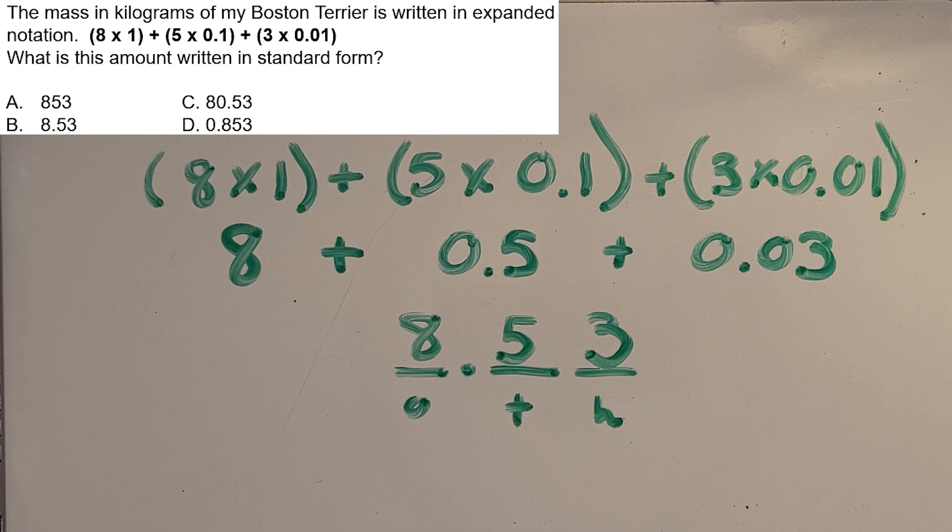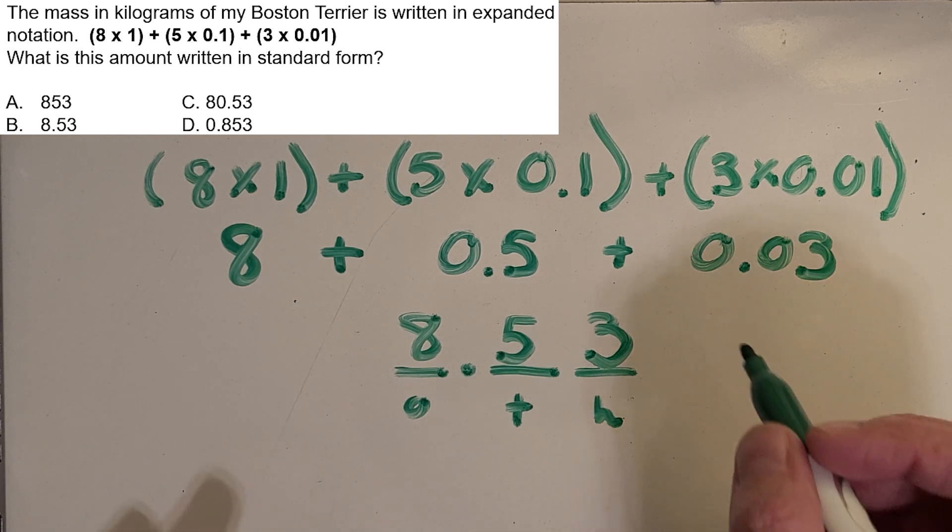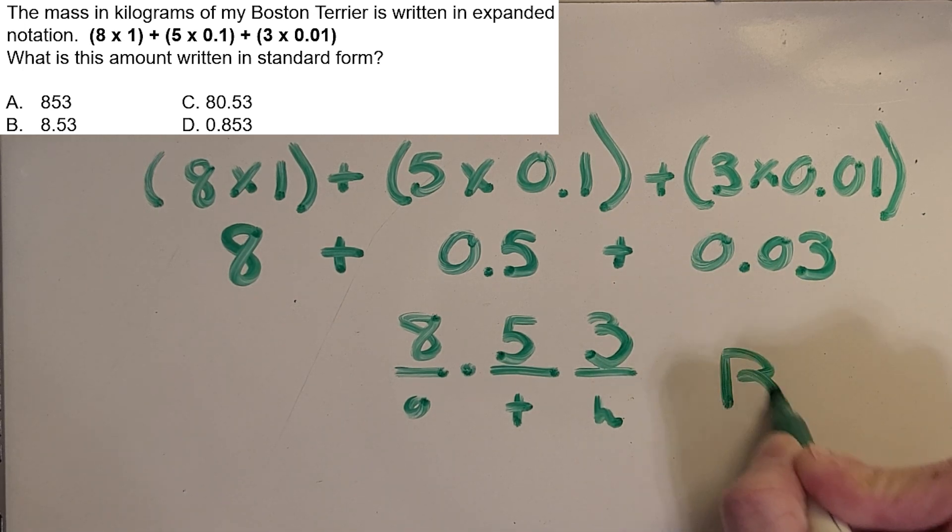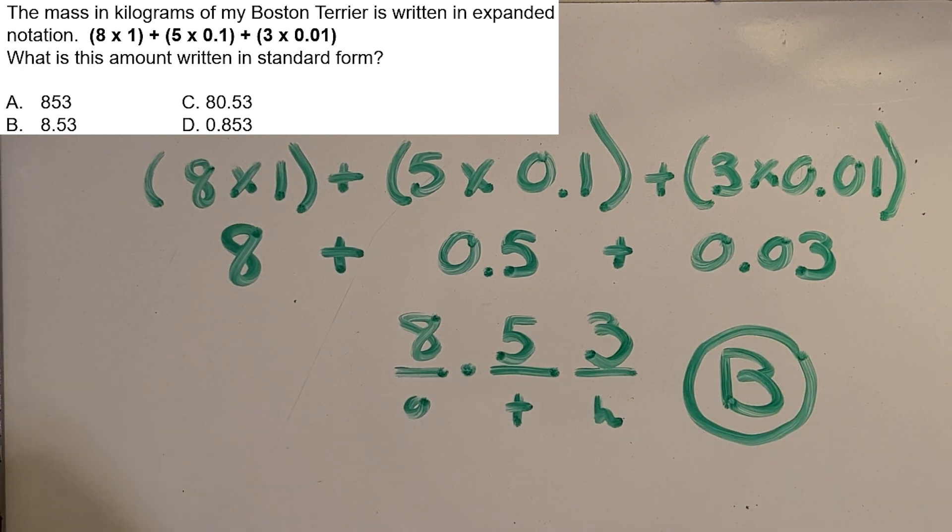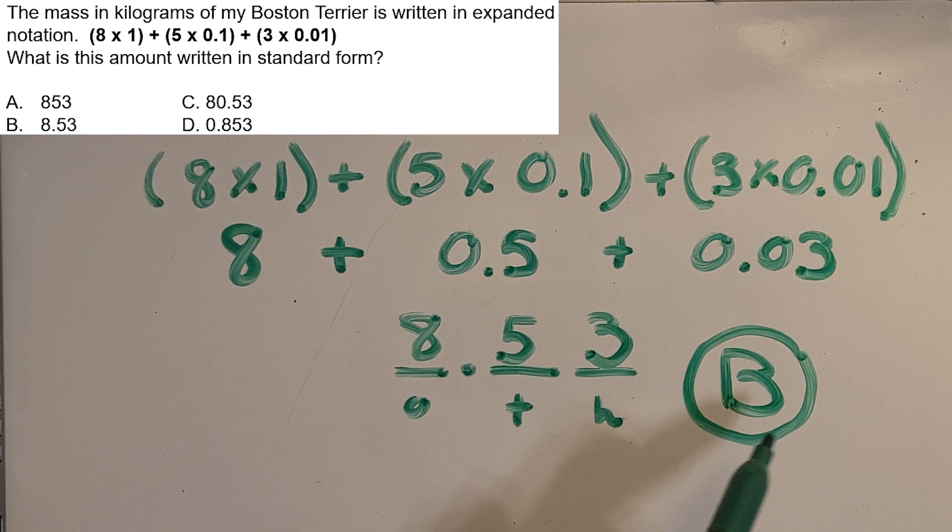Okay. And then which answer choice matches our work? Yep, you got it. B. And it is a good thing that we went ahead and wrote this down because all of my answer choices are so similar. They have the same digits. It would be really easy to make a mistake on this one because they're all so similar. So now I feel so much more confident about the choice that I picked.